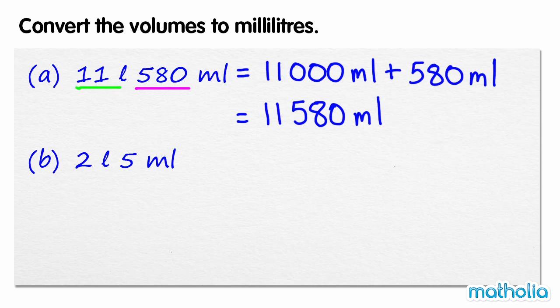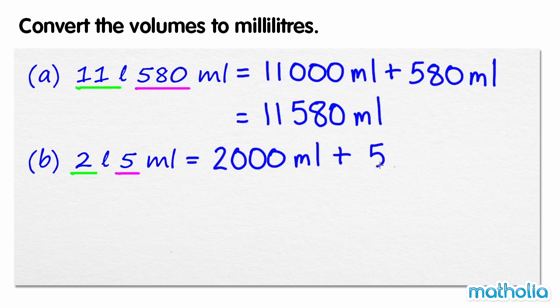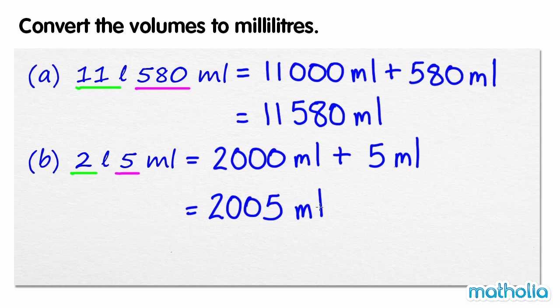2 litres is equal to 2000 millilitres. So we can rewrite 2 litres 5 millilitres as 2000 millilitres plus 5 millilitres, which is equal to 2005 millilitres.